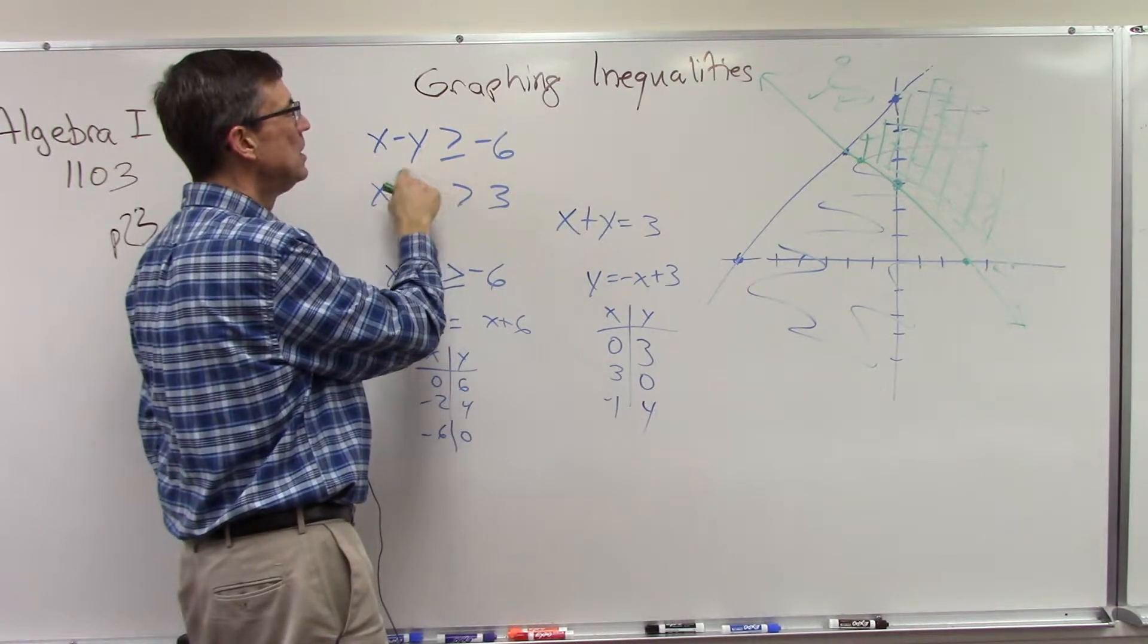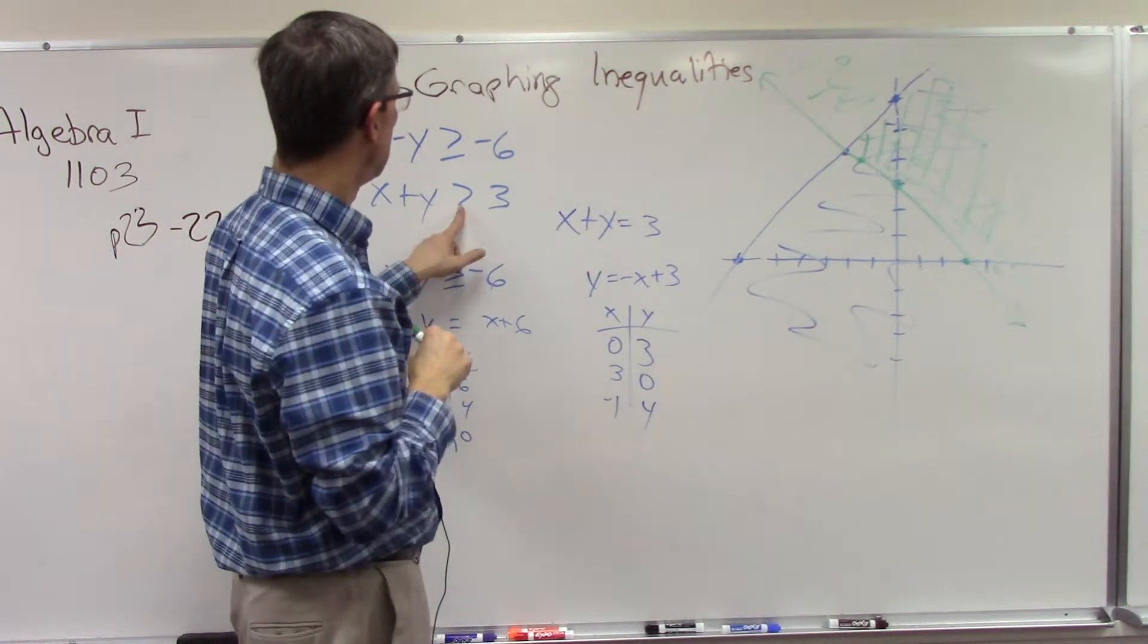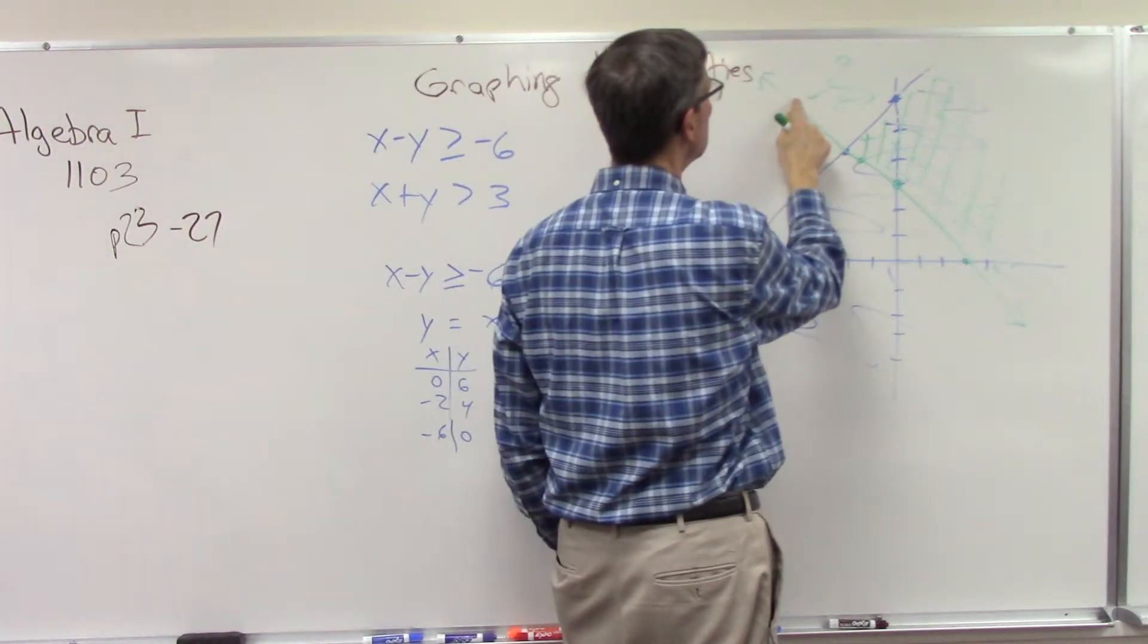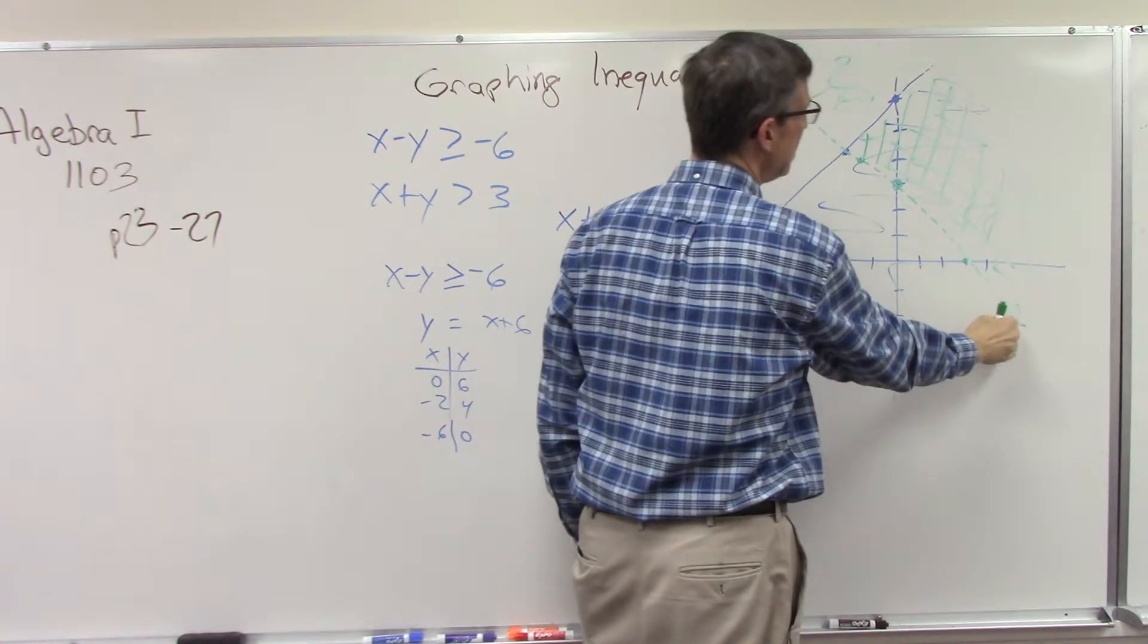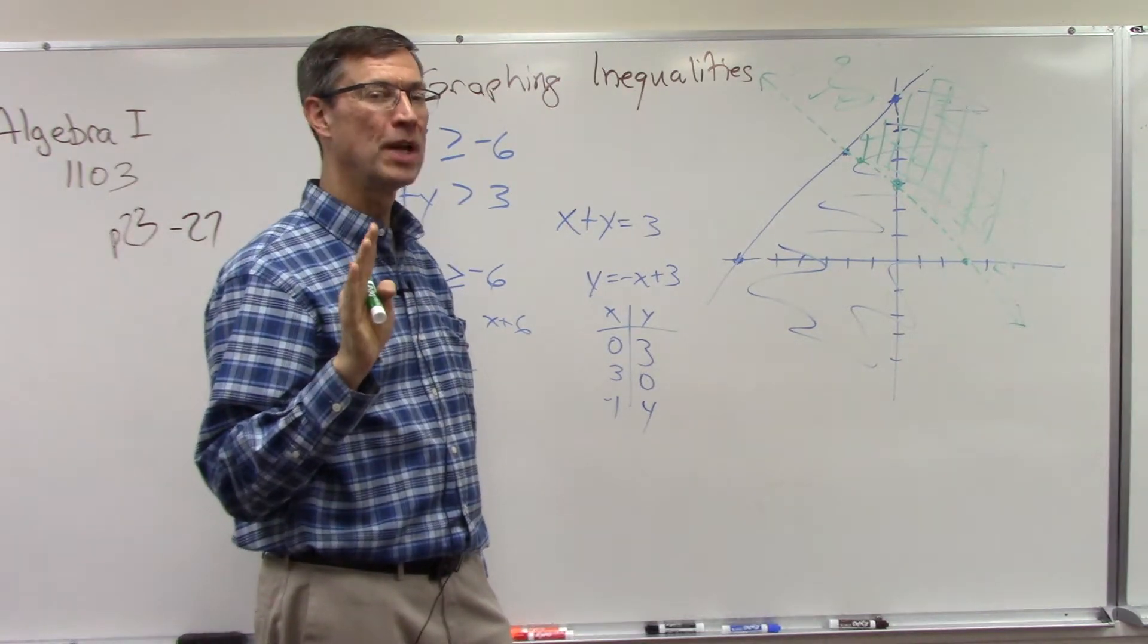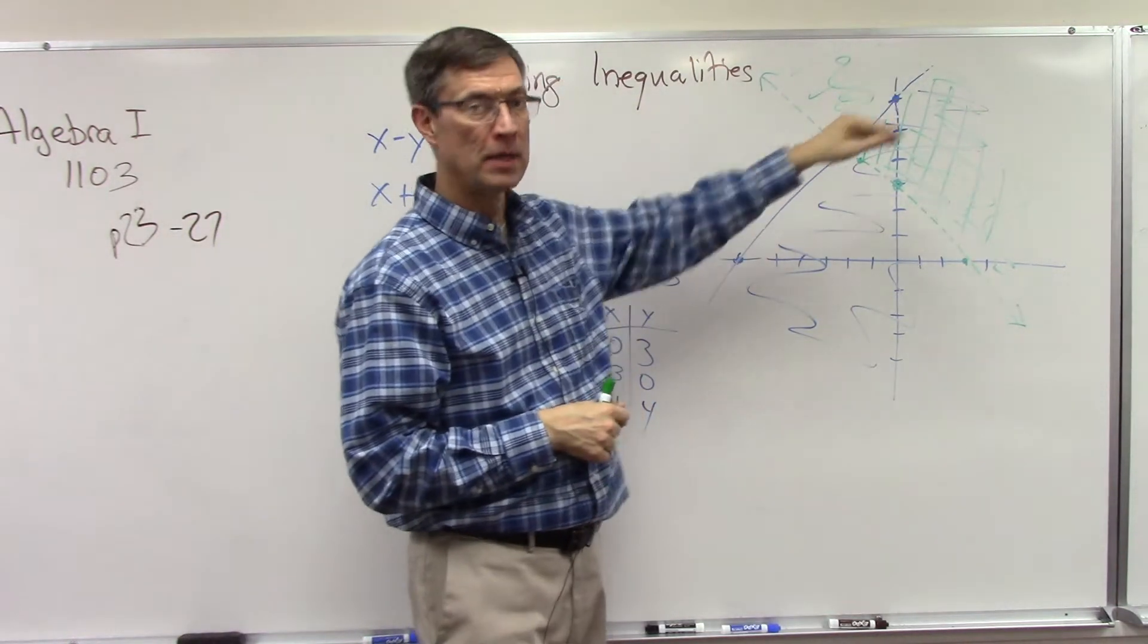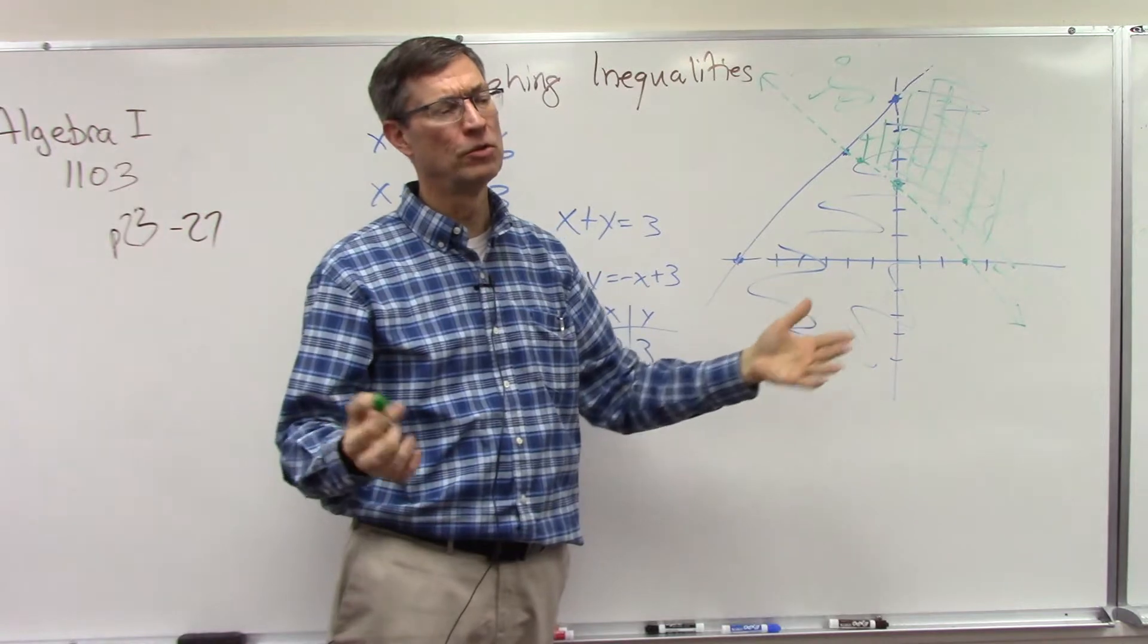There's one more thing. This first one had is greater than or equal to, so remember I said we'll use a solid line. This one does not say or equal to, it just says x plus y is greater than 3. So here's what we have to do: one more step here for that particular line, we have to go back and make it a dotted line. What that means is it's a barrier between the shaded and the unshaded part, but the actual points that make up that line are not part of the solution set. The easy way to remember it is if there is a line under the less than or greater than symbol, then it means it's a solid line. If that line is missing, then it means it is a dotted line.